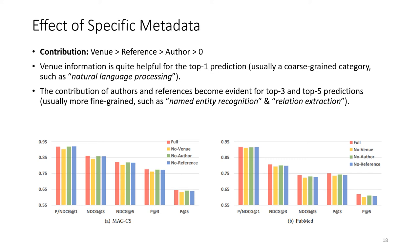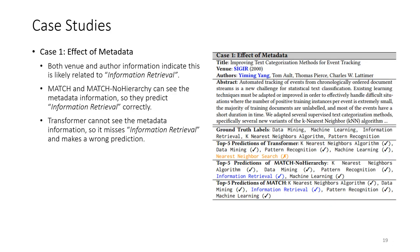However, the contribution of authors and references becomes evident for top-three and top-five predictions, which are usually more fine-grained, such as named entity recognition and relation extraction, which venue information is not enough to predict.